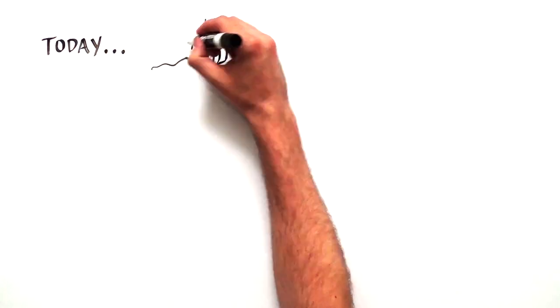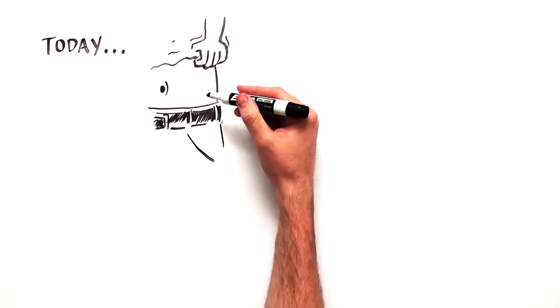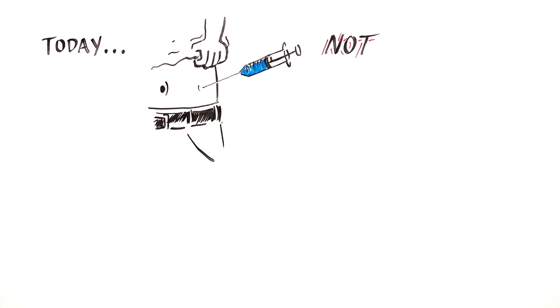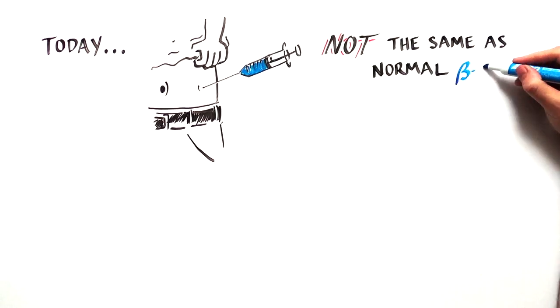At present, diabetics inject insulin with a syringe or pump, but providing insulin by that means is nowhere near as exact and effective as having functional beta cells.